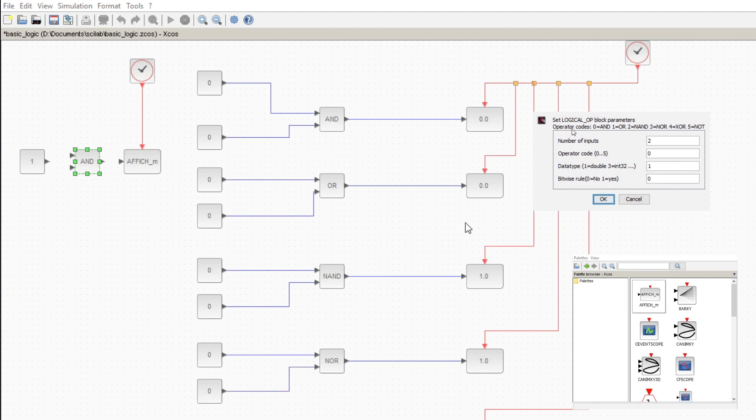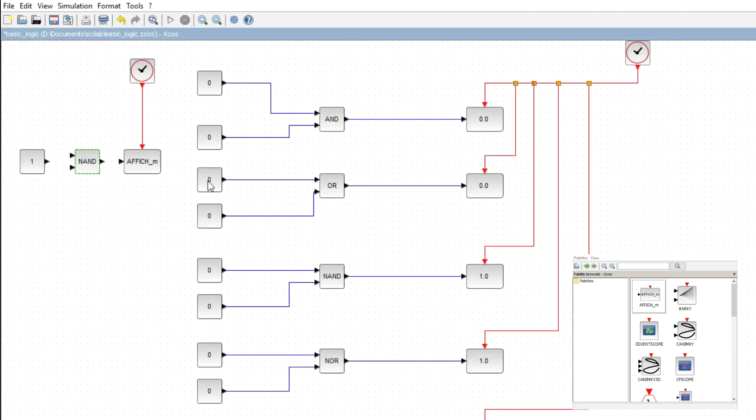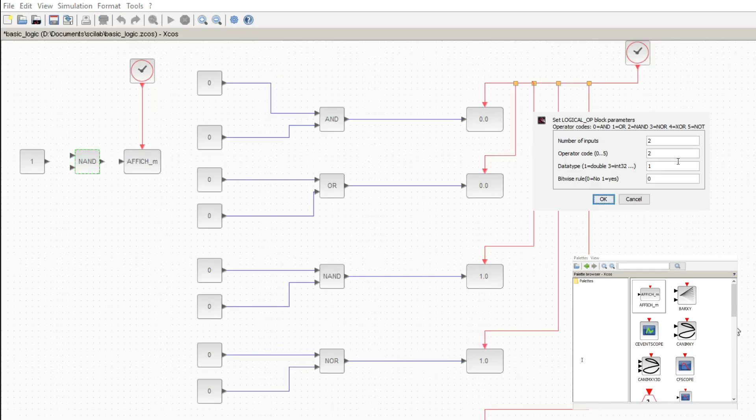It's simple - it's written here. You just need to change the operator code here. You can give a different number from 0 to 5. If you give, for example, 2, it will become AND. For the NOT gate which we need, you change it to 5. Number of inputs should be 1, and that's it.